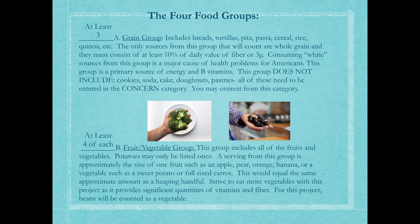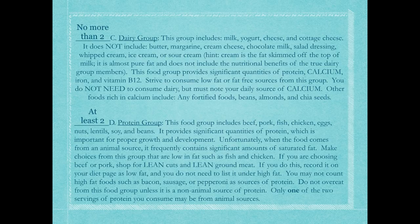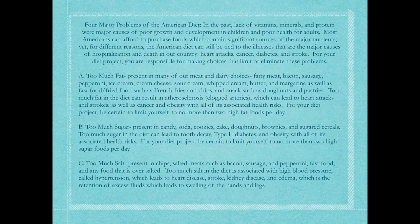Quick review of key requirements: you need at least three servings of grain, at least four servings each of fruit and vegetable, no more than two servings of dairy, and at least two servings of protein — with only one coming from an animal source. This is a lot of food. The challenge with this project is that many of you do not consume as much food as you need to meet your nutritional requirements, so plan ahead and try to combine multiple requirements into one meal.